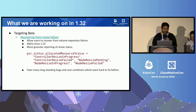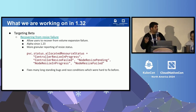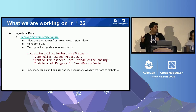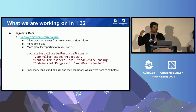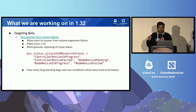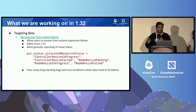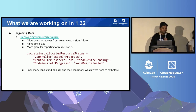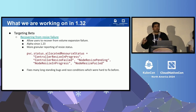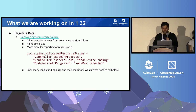Another feature moving to beta in 1.32 is recover from resize failures. If you've used volume expansion, you may have seen that if you expand the size to too large a value — or if the storage provider doesn't have enough capacity — it just gets stuck with no way to recover without a lengthy manual process. This feature will allow you to reduce the volume size and retry volume expansion. It also exposes resize status at a more granular level, fixing many long-standing bugs and race conditions, making the process more robust in 1.32.